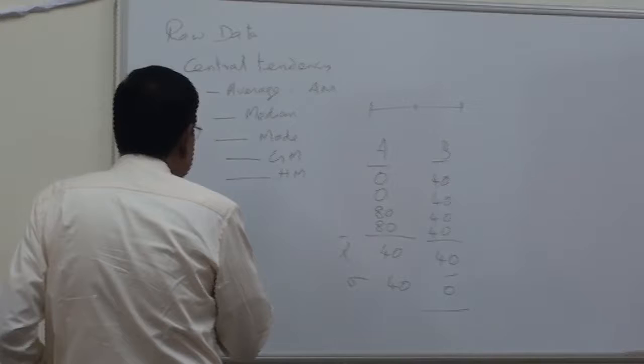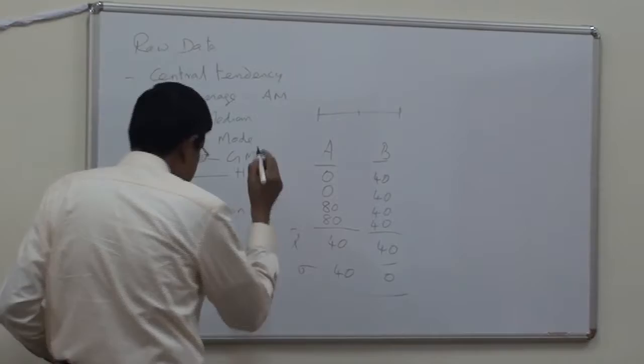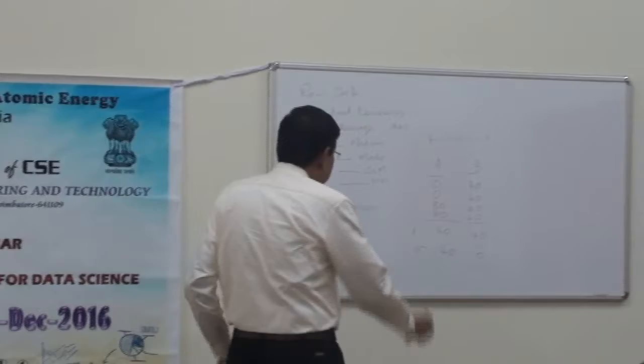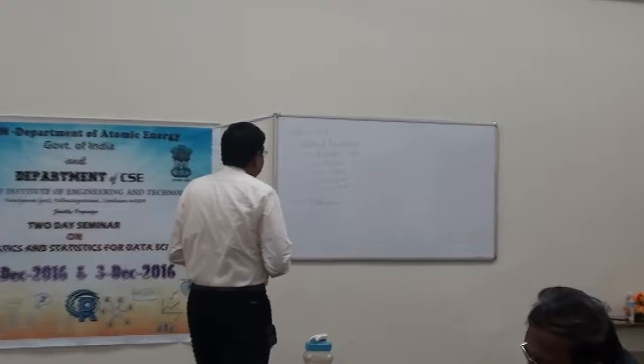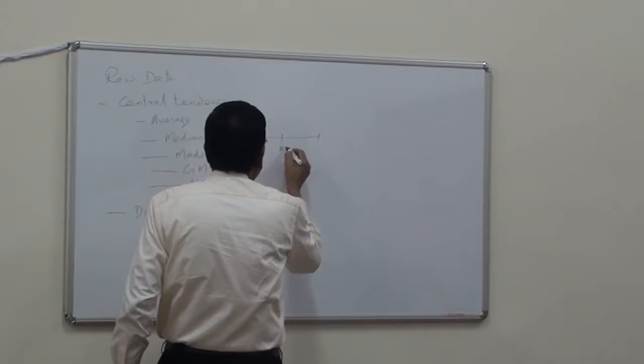Measures of dispersion — that is the second set. Before we go to dispersion, let us take median. If you take a series of values, median is the middle value of that set.